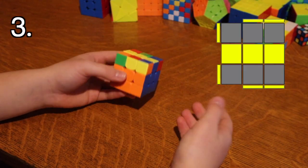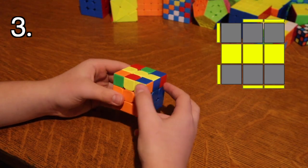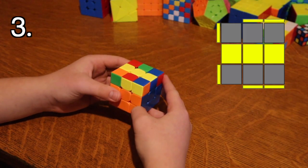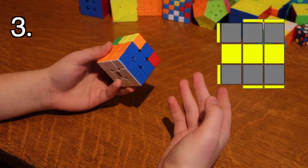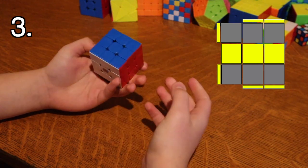And the next case is actually even easier once you know the one I just showed you. It's this case, it's just a straight line and there's two bars and the other two corners are pointing out. What you do is you hold it like this and you do that algorithm that was in the last one, but twice. And it solves itself.